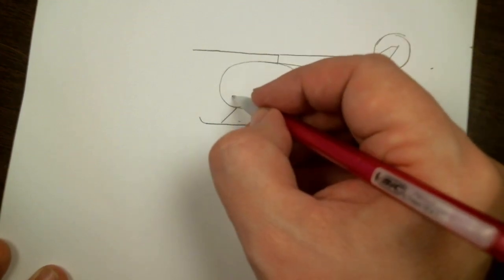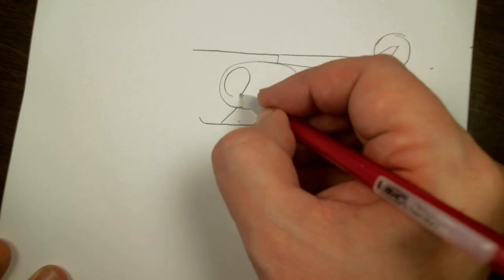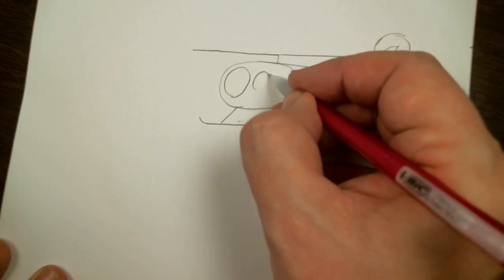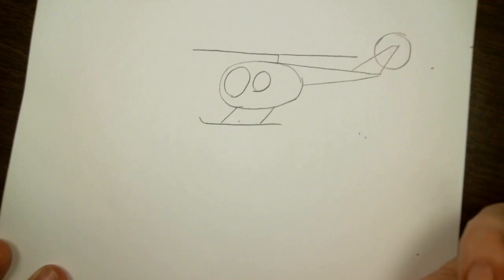And then for our windshields we're going to put an oval here and a circle here and you've got a basic helicopter.